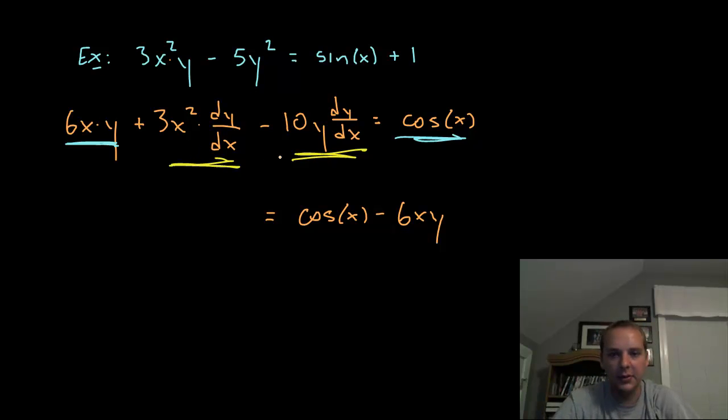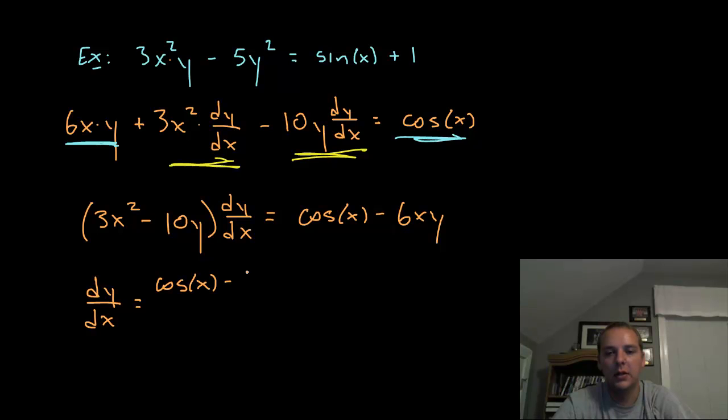Now I see the two terms in yellow left. So if you don't mind, I'm going to go ahead and factor out the dy/dx as common. And inside the parenthesis, we'd have 3x squared minus 10y. So the final answer: dy/dx equals cosine x minus 6xy all over 3x squared minus 10y.